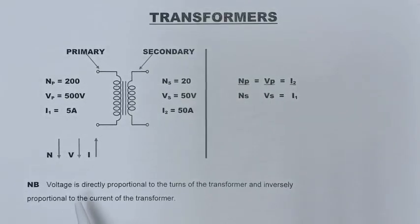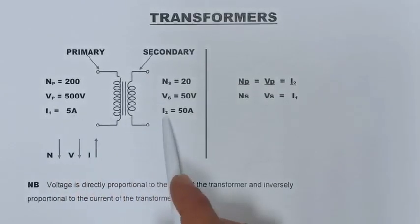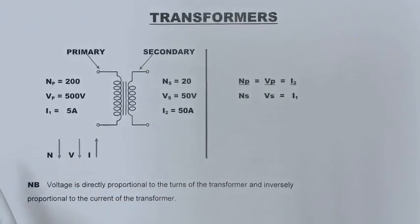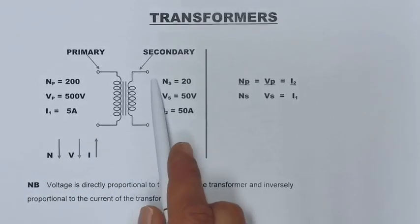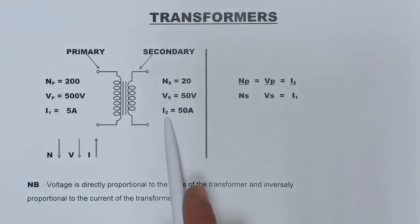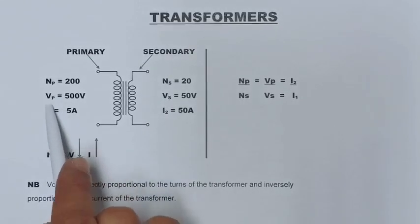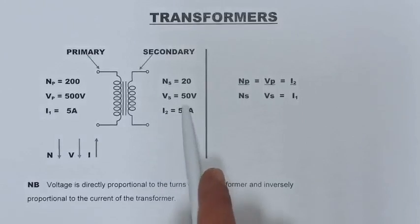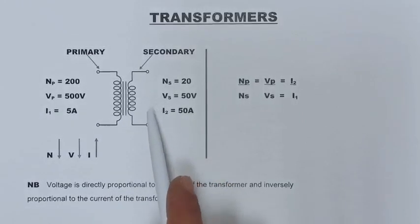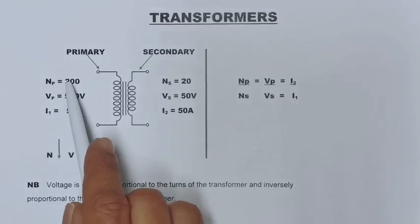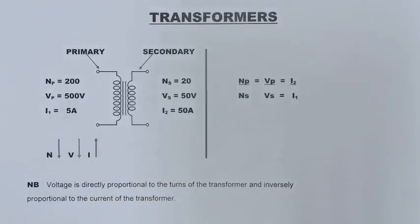Now, looking at the current: I1 is 5 amps and I2 is 50 amps, which means current is inversely proportional to the voltage and the turns of the transformer. Whatever these two quantities come down by, the current goes up by the same factor. That is why with 5 amps on the primary, we get 50 amps on the secondary — it goes up by a factor of 10.